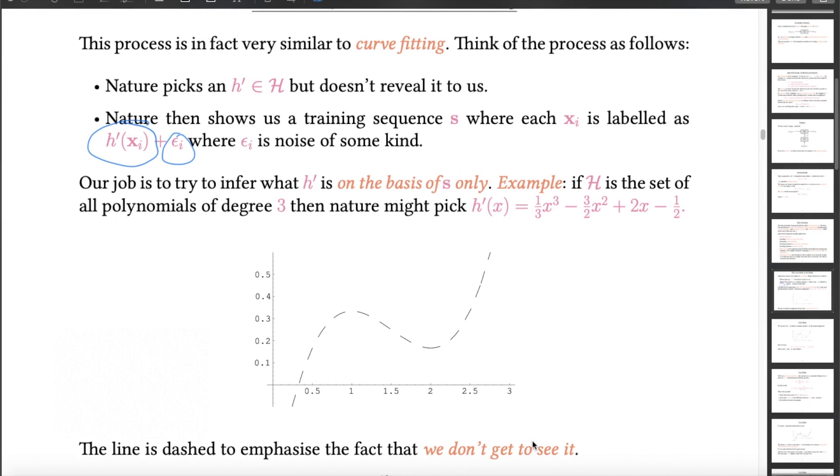But the key underlying idea here is that there is a function, we don't know it, this is h prime. We want to identify it, but we're only getting partial information because there are a finite number of function arguments, xi. And for each of those, we're given something that is close to the value of h prime, but corrupted by some noise.